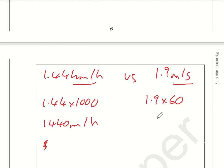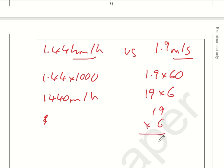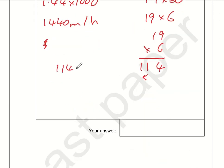1.9 times 60—I'm going to make this number 10 times bigger and this 10 times smaller, so 19 times 6. Six nines are 54, carry the five. One times six is six, plus five is 11. So 1.9 metres per second is 114 metres per minute. Now multiply this by 60. 114 times 6 is 684, add a zero—6,840 metres in an hour.